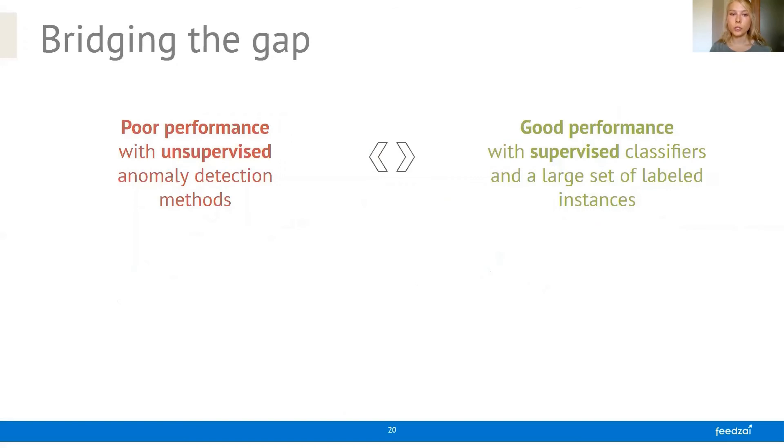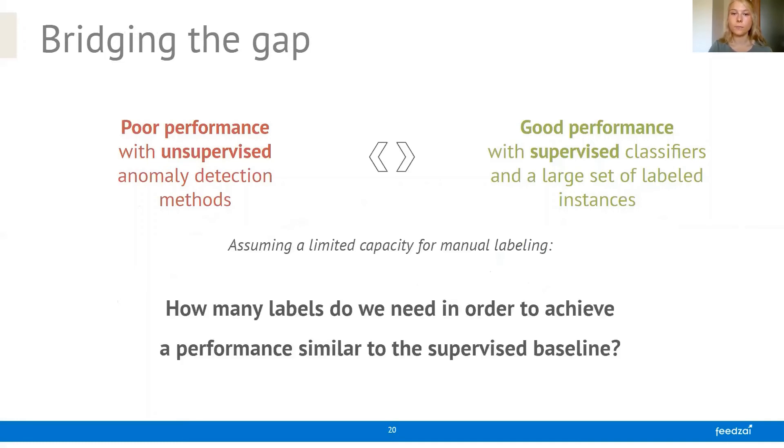So we were now in this position where we had poor performance with unsupervised anomaly detection methods, assuming no labels at all. And then we had good performance with supervised classifiers, but here we were dependent on a large set of labeled instances. And now because we're looking at a practical AML setting, we were wondering if we assume a limited capacity for manual labeling, because we have human experts available to review transactions, we were wondering how many labels do we need in order to achieve a performance that is similar to the supervised baseline.